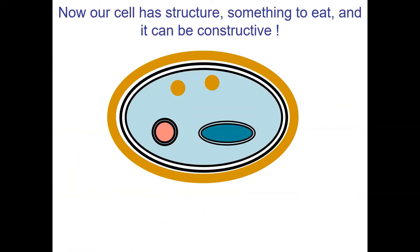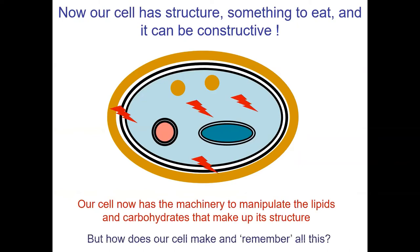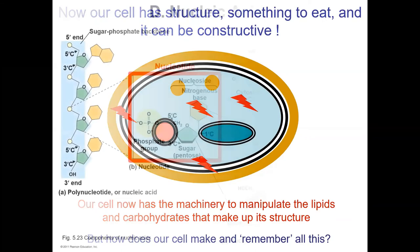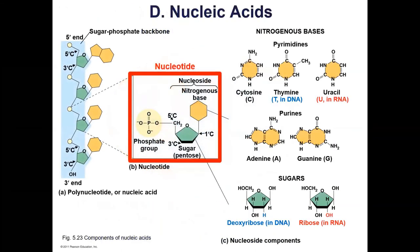So there's our cell — it's got a membrane, carbohydrates, enzymes that can move things around and carry out chemical reactions. The last part is how does our cell make things and remember what to do from generation to generation? Of course, we're going to talk about nucleic acids.